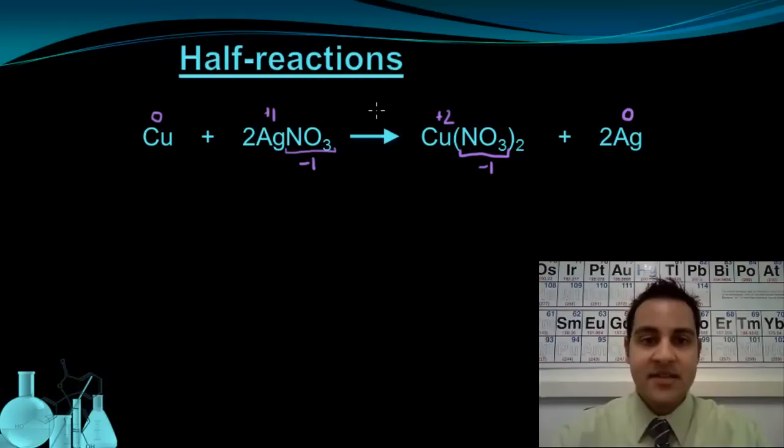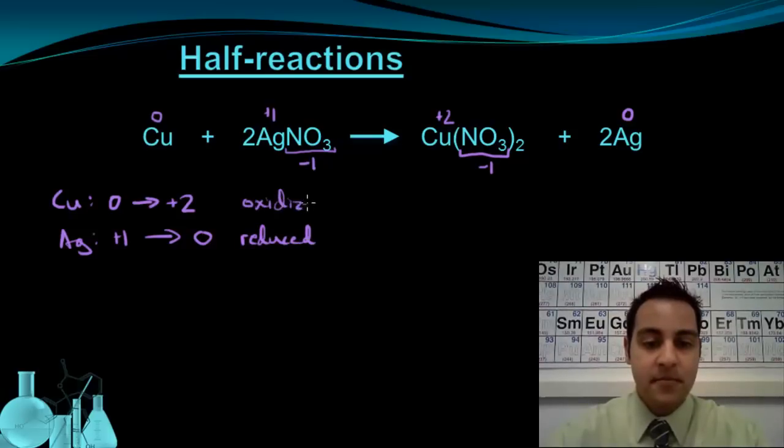The elements that were oxidized and reduced were the copper and silver. The copper started as zero and became plus 2. The silver started as plus 1 and became zero. For silver, the number is being reduced—one goes down to zero—so it was reduced, and the other one has to be oxidized. We could also look at this from the copper's perspective. The copper started off at zero and its oxidation number increased. The only way to become more positive is to lose electrons, and losing electrons is oxidation.